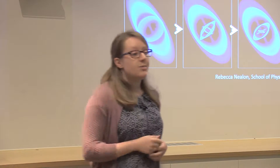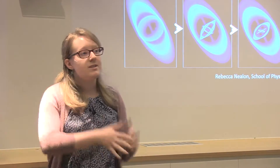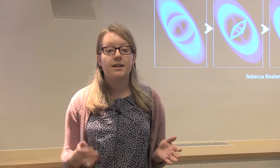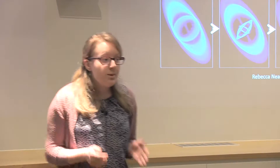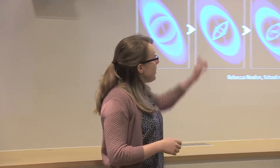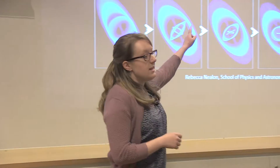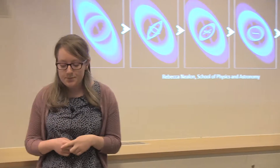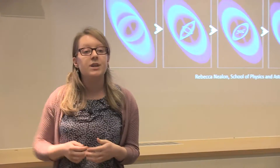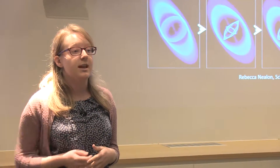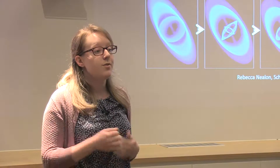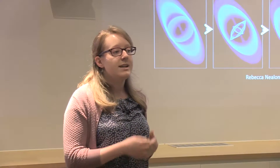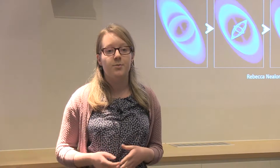One thing we can observe is the light that's emitted from across this entire region, and when we do, we find that it oscillates rapidly. The frequency with which it oscillates is identified by the small lumps in the observational example in white. These features are known as quasi-periodic oscillations, and despite being observed first more than 30 years ago, there's still no complete and satisfactory model to explain them.